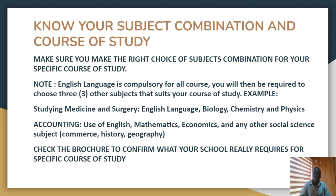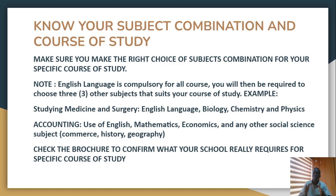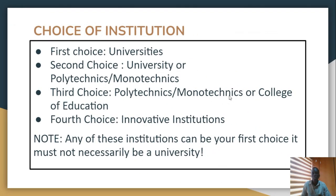For example, if you're studying Medicine and Surgery, you will be required to take English Language, which is compulsory, plus Biology, Chemistry, and Physics. And if you are doing Accounting, then Use of English is compulsory with Mathematics, Economics, and any other social science subject you desire. The brochure will tell you more about it, and you can always find a link in the description section of this video to download it.